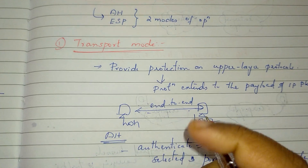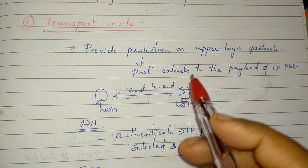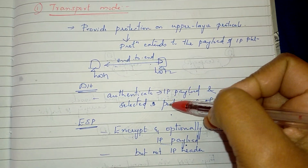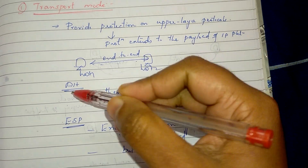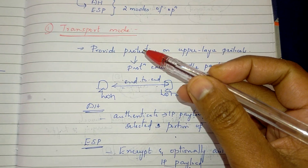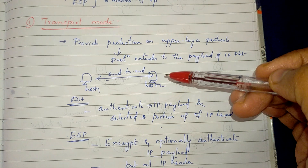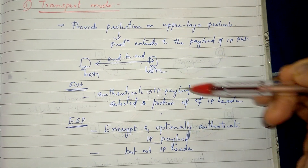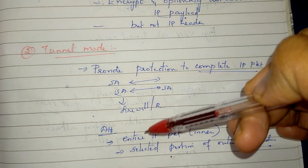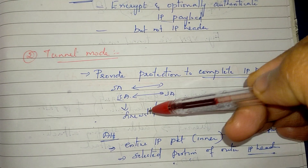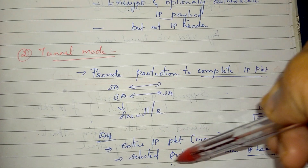In transport mode, we authenticate the payload and the IP header — we authenticate selected portions of the IP header. In tunnel mode, the entire IP packet — the inner IP packet — and the outer IP header's selected portions are authenticated.